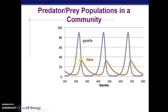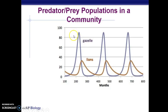Similarly, if the amount of lions spiked, the gazelles would go down, and then whatever the gazelles eat would not have any food. This cycle relationship between predator and prey is important for keeping the community stable. If it gets unbalanced, that could cause ripple effects throughout the entire community.